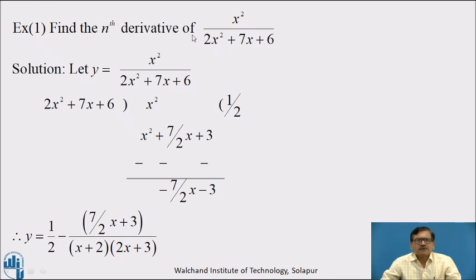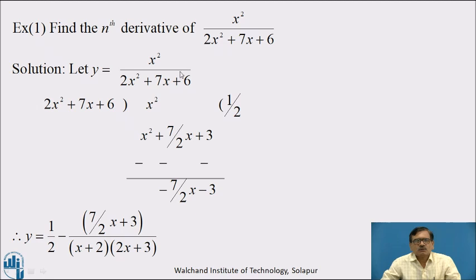Find the nth derivative of x² upon 2x² plus 7x plus 6. Now, here, the degree of the numerator is 2 and the denominator is also 2. Therefore, we cannot go for partial fraction directly. We have to divide the numerator by the denominator, because we have to express the function in the form of 1 upon ax plus b, and for that we go for partial fraction. But since the degree of numerator and denominator is the same, we must first divide.